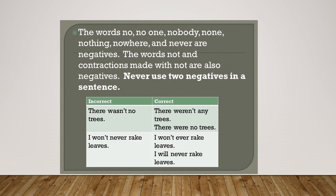The last and most important general rule: we use negative words like not, no, never, none, nobody, nothing, neither, nor, etc. to make negative sentences.